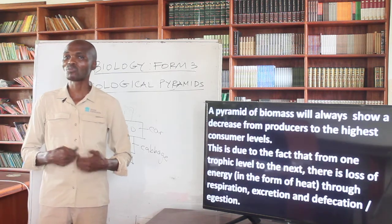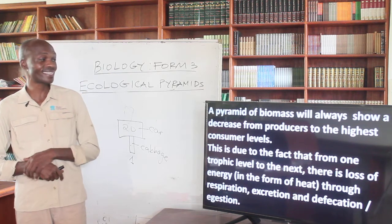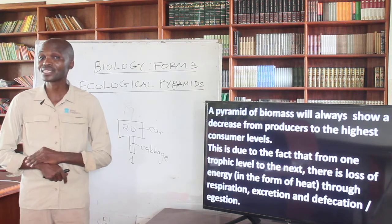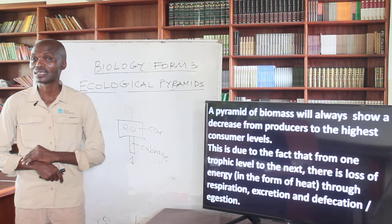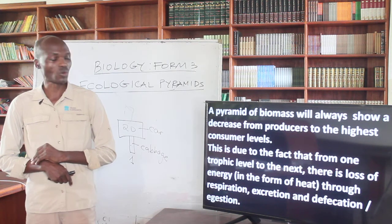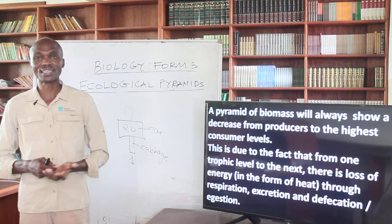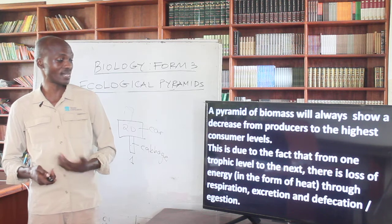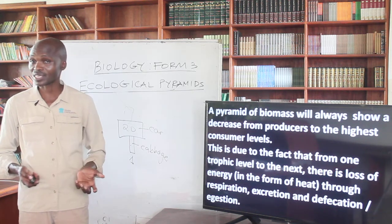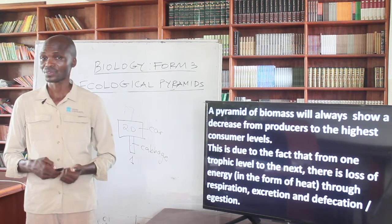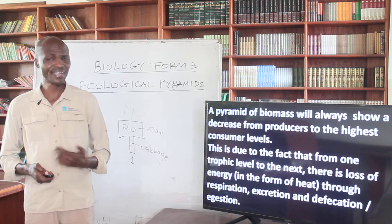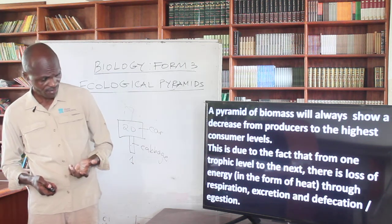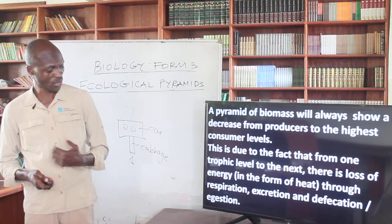A pyramid of biomass will always show an increase from producers to the highest consumer levels. This is because from one level to the other, we always encounter loss of energy through the processes of respiration, excretion, and decomposition.